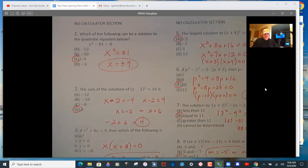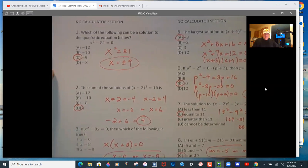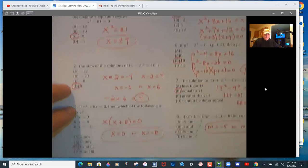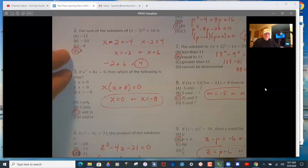So on this one, the best thing to do is just solve for x squared, and then take the square root of both sides, and you get plus and minus 9. So negative 9 is the solution.